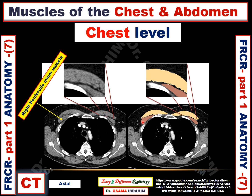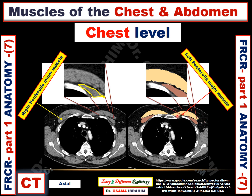The pectoralis minor muscle appears here in dark brown, and also in this magnified image labeled in yellow. The other arrow refers to the largest muscle in the anterior chest wall, called the pectoralis major muscle, here on the left side — the left pectoralis major muscle, appearing in the magnified image bounded by red color.